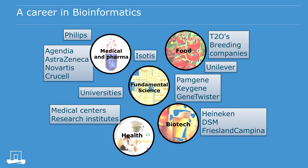There is a need for bioinformaticians at universities, at institutes, and at companies. At universities, this usually involves fundamental science. Companies can be in different areas of research, for example medical and pharma, food, biotech, and health.